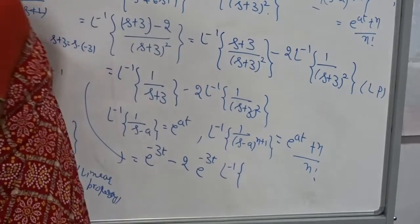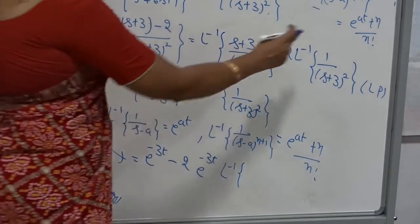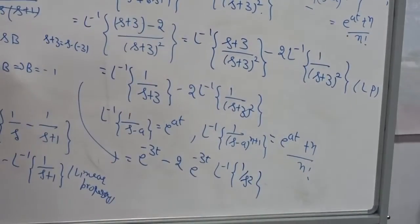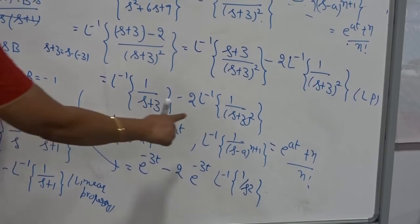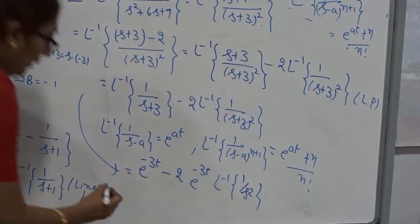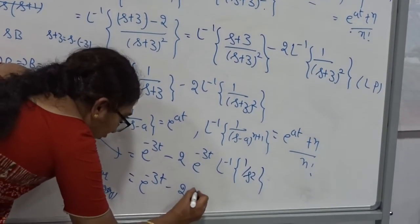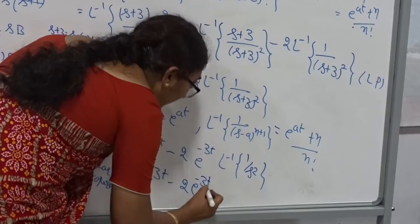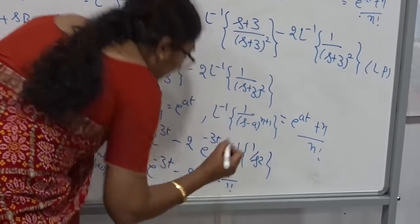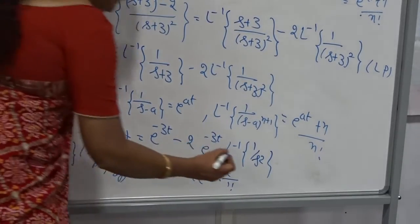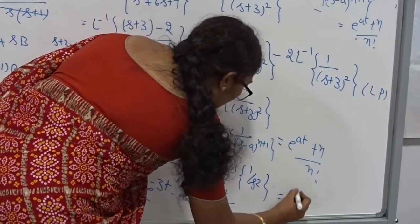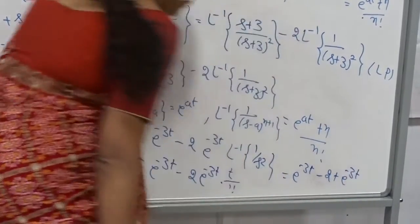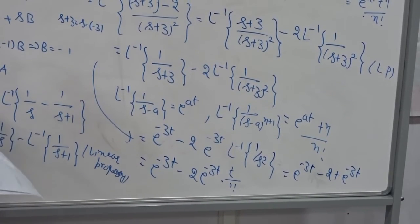Therefore, the final answer is: L inverse of S plus 1 divided by S plus 3 whole square equals E power of minus 3T minus 2T into E power of minus 3T. This is the way to find the inverse of the function using the completing the square method.